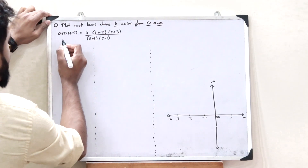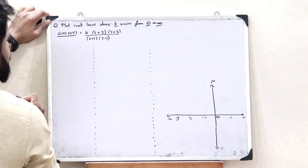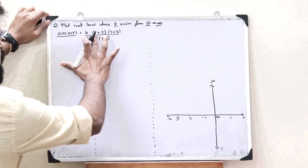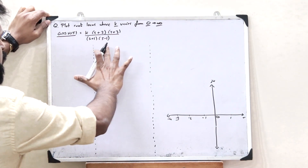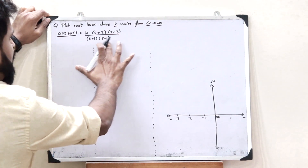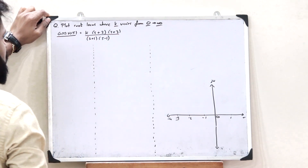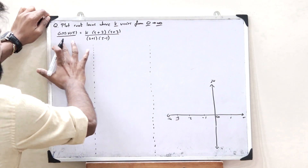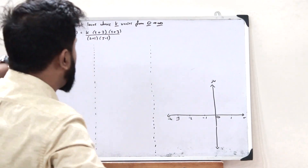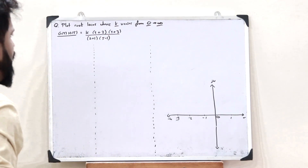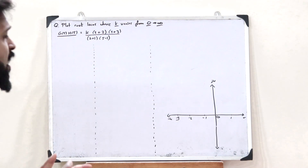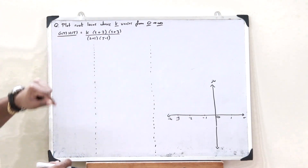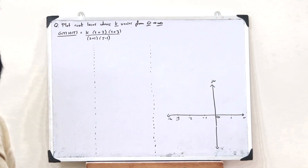The open loop transfer function is given as G(s)·H(s) = k·(s+2)(s+3) / [(s+1)(s−1)]. When we get the open loop transfer function, the first thing we have to do is observe and find the zeros and poles of this particular open loop transfer function.